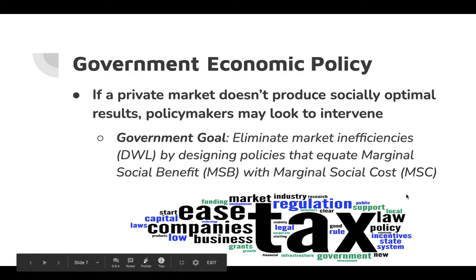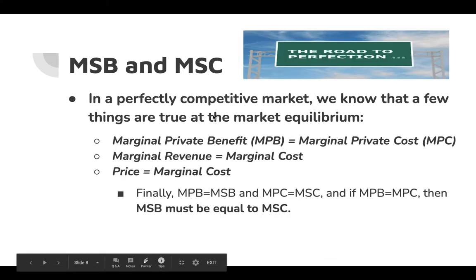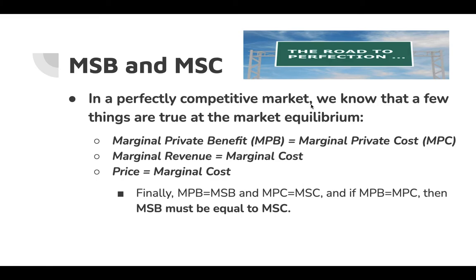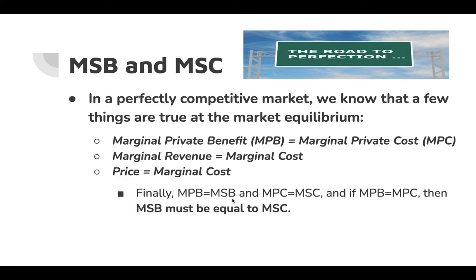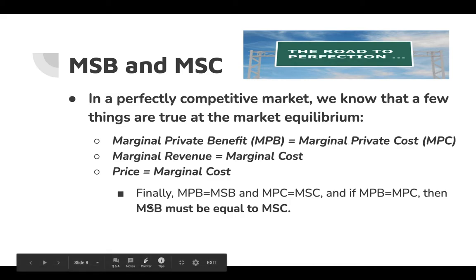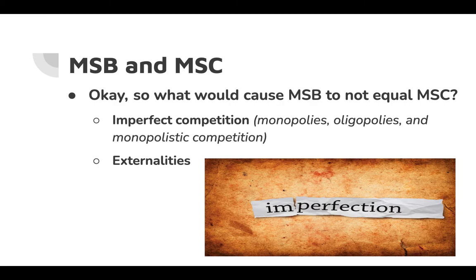The government has all kinds of tools it can use. In a perfectly competitive market at equilibrium, MPB equals MPC, marginal revenue equals marginal cost, price equals marginal cost, and marginal social benefit equals marginal social cost because in perfect competition the private benefit is the social benefit and the private cost is the social cost. So what would cause these two things to not be equal?